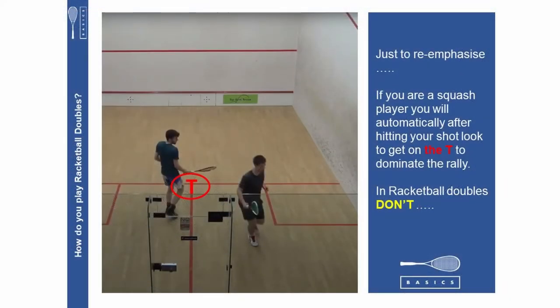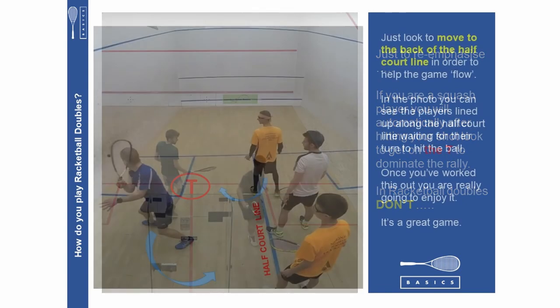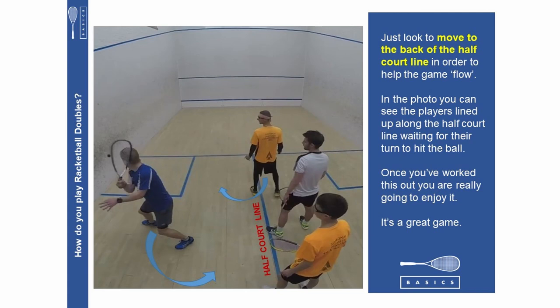Just to re-emphasize, if you are a squash player you will automatically after hitting your shot look to get on the tee to dominate the rally. In racquetball doubles don't. Just look to move to the back of the half court line in order to help the game flow. In the photo you can see the players lined up along the half court line waiting for their turn to hit the ball. Once you've worked this out you are really going to enjoy it. It's a great game.